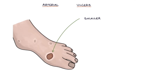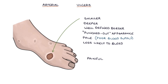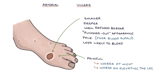Arterial ulcers are smaller and tend to be deeper than venous ulcers. They have a well-defined border and a punched-out appearance. They're pale in color due to poor blood supply, less likely to bleed, and painful. The pain tends to be worse at night when the patient is lying horizontally, worse on elevating the leg, and improves with lowering the leg because gravity helps the circulation.